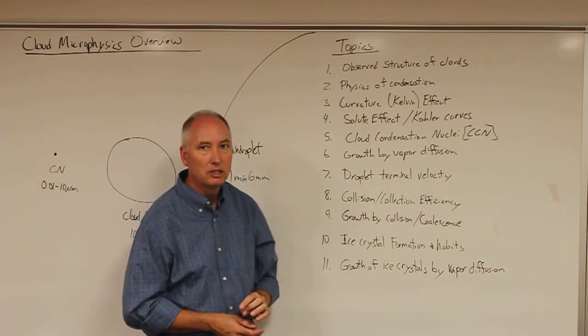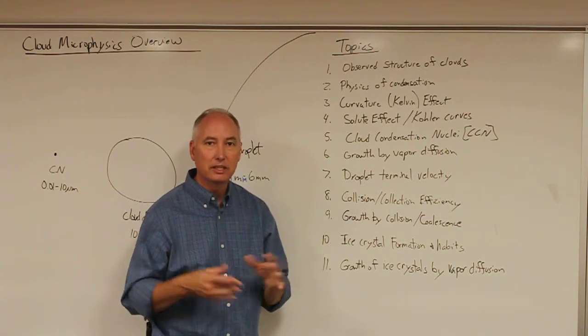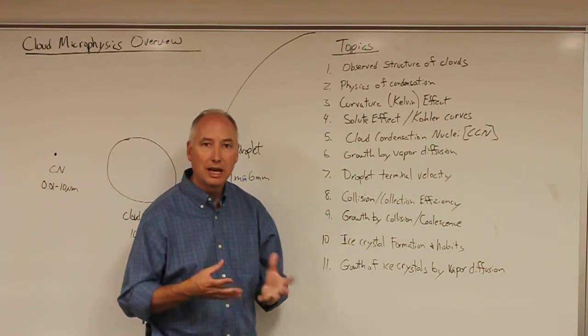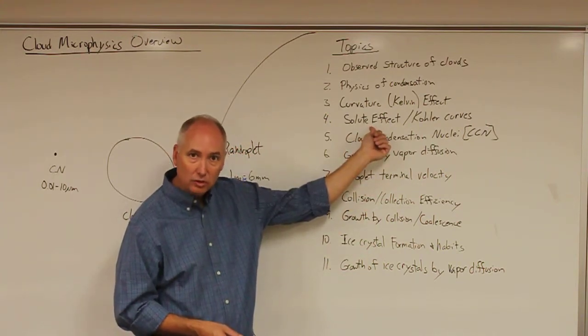Then we'll talk about the solute effect and introduce Kohler curves, which basically reduce the equilibrium saturation vapor pressure for cloud droplets by adding impurities into the droplets.